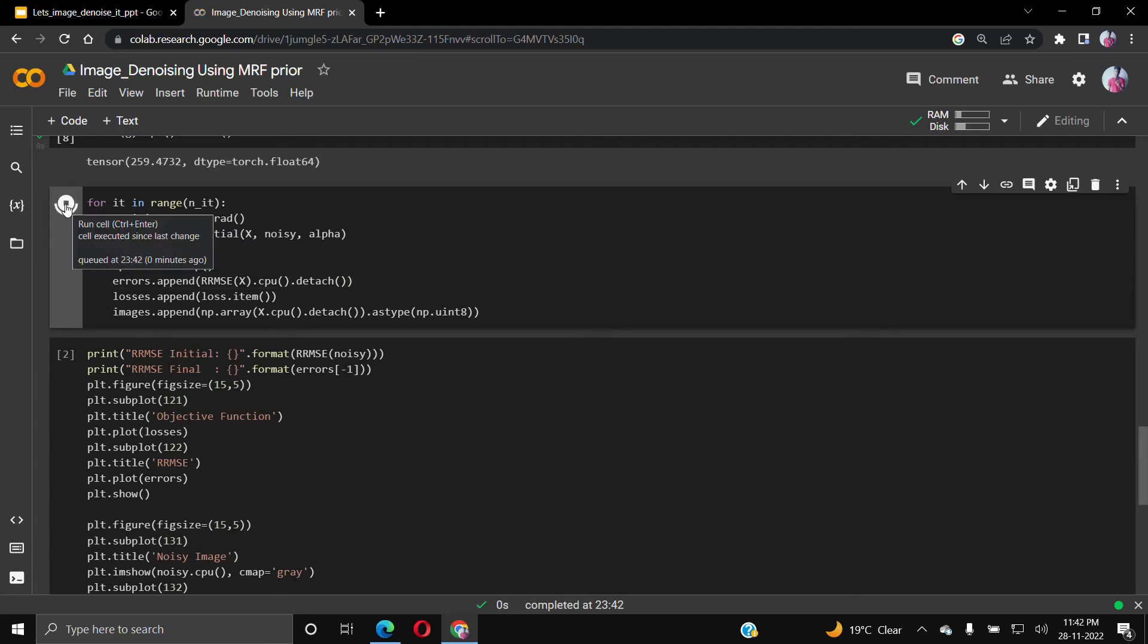After that, we train our model with the main objective function that has the MRF prior plus MRF potential functions. The MRF prior we take here as a quadratic function.